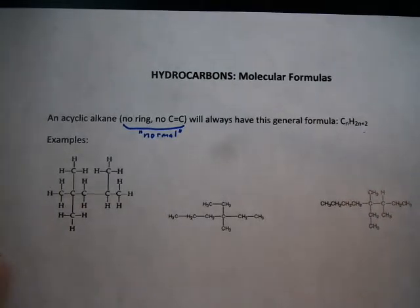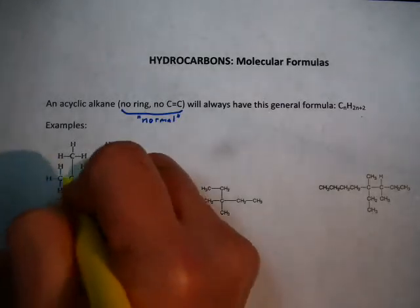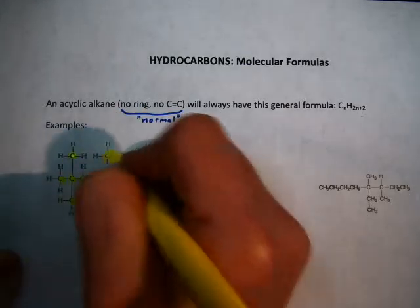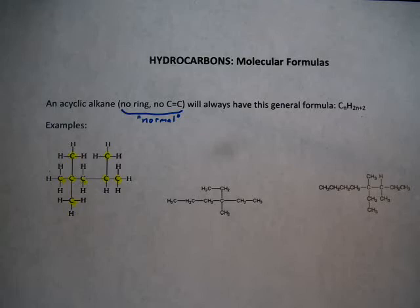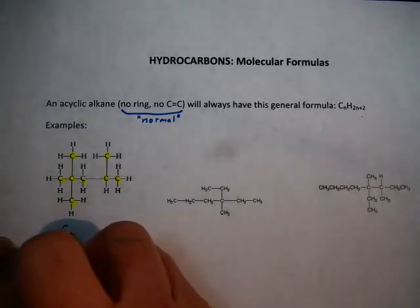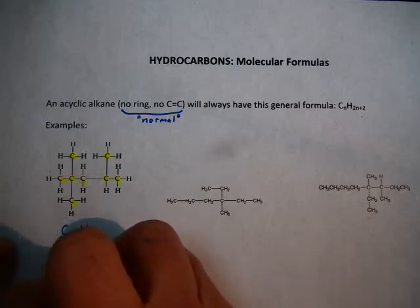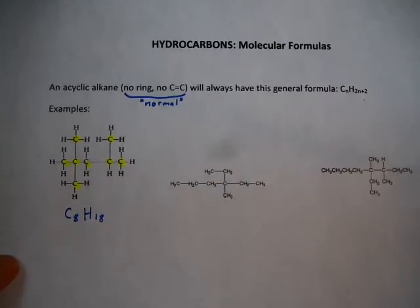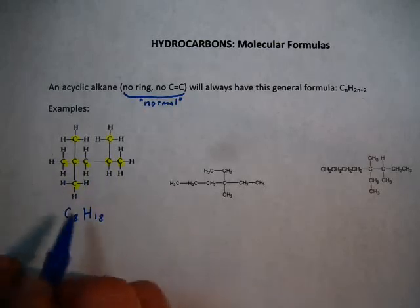So if we take a look at a couple of examples here, we can see how that looks. This first case has 1, 2, 3, 4, 5, 6, 7, 8 carbons. 8 carbons means that it would be double that is 16 plus 2 is 18. So C8H18, and if you count all those hydrogens, sure enough you'll see that there are 18.